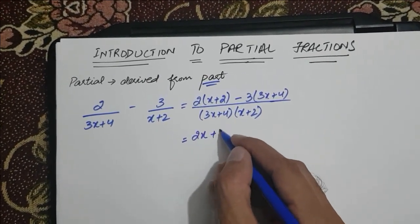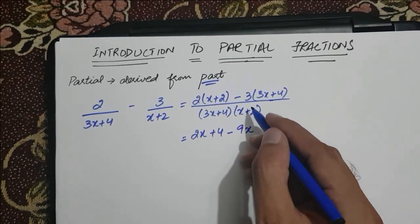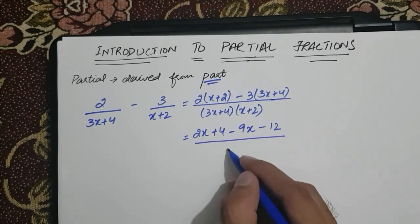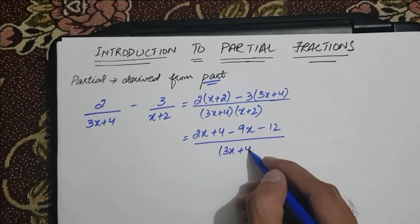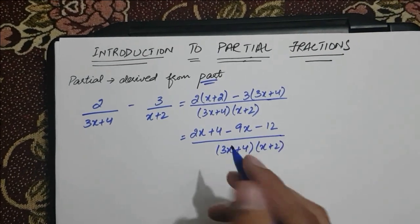Solving above, we get 2x plus 4 minus 3 times 3x is 9x, minus into plus is minus, and 3 times 4 is 12. In the denominator, we get 3x plus 4 into x plus 2.